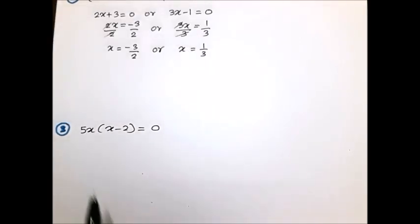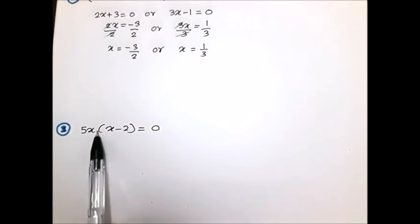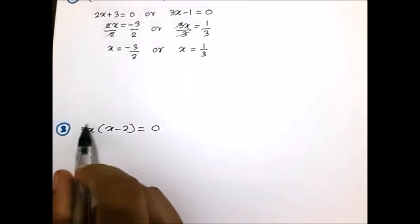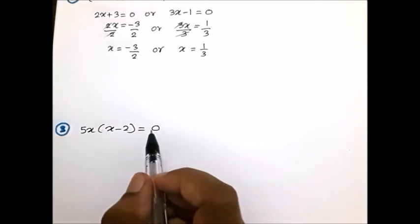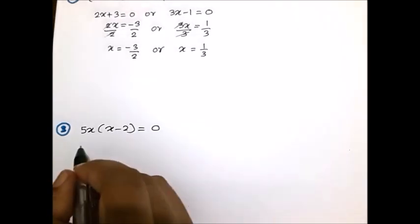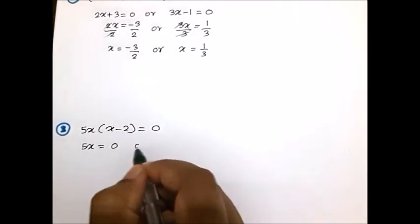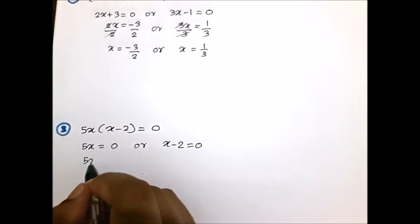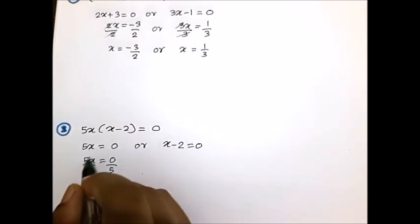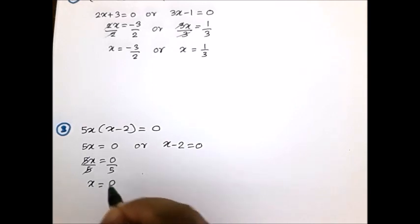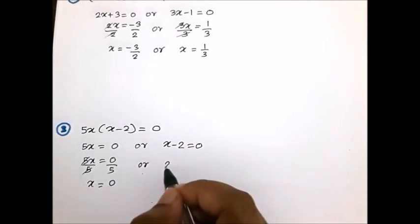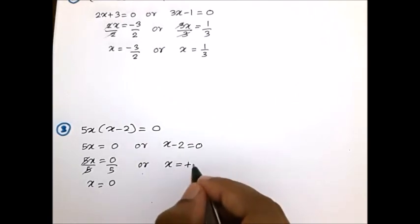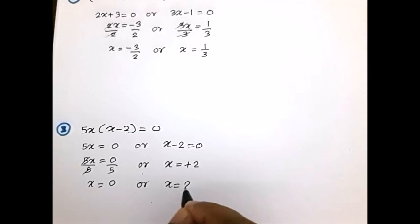Now look at the third example. The operation between the two terms is multiplication, so at least one should equal 0. We write 5x = 0 or x - 2 = 0. Dividing both sides by 5 gives x = 0. Taking -2 to the right gives x = 2. The solution is x = 0 or x = 2.